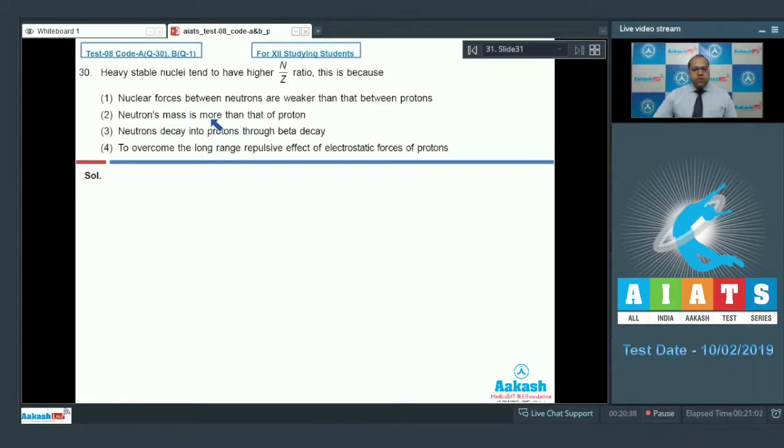Neutrons mass is more than that of protons. This is not the reason. Neutrons decay into protons through beta decay. This is correct but this is not the correct logic. And option 4, to overcome the long range repulsive effect of electrostatic force of protons. So this option is correct because in case of heavy stable nuclei, as the number of protons increases, the electrostatic force also increases.